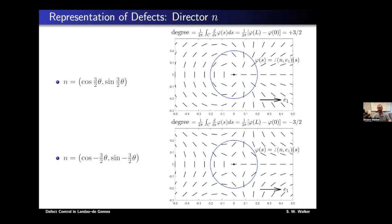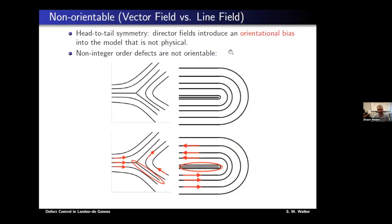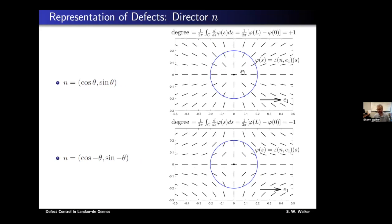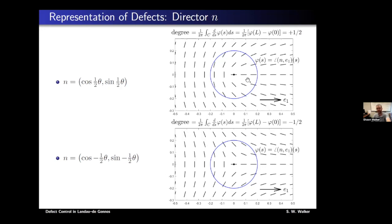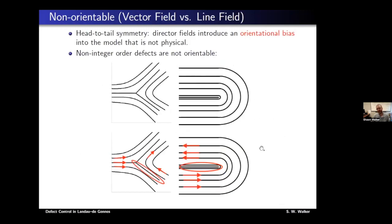That's in 2D. If we're in 3D, you don't necessarily have point defects, but line defects along a 3D space curve, where each normal cross-section looks like a 2D defect. The key thing about half-integer defects is you can't orient them — if it's a half-integer defect, there's no way to give it an orientation without introducing a fake discontinuity. So you cannot use a vector field to model half-integer defects, and these do occur in LC applications. You need a model that respects that symmetry, and that's what the Landau-deGennes model does.